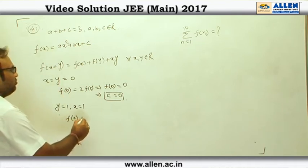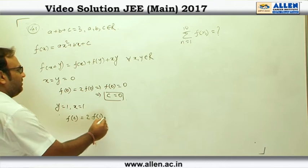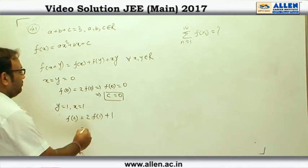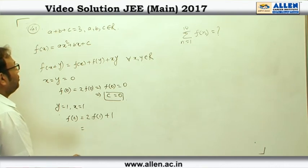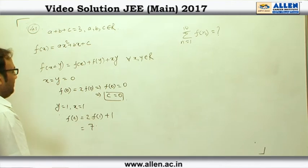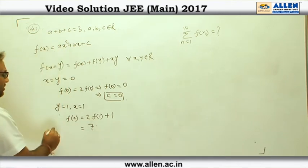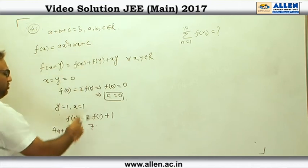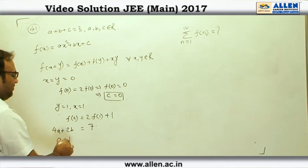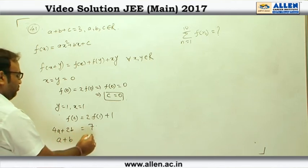So, f(2) is equal to twice f(1) plus 1. Now, f(1) is given to be 3, so that is 6 plus 1 is 7. Now, f(2) if we read from here, it is 4a plus 2b and c is 0. So, 4a plus 2b is 7, and if we put c equal to 0 here, then we have a plus b equals to 3.